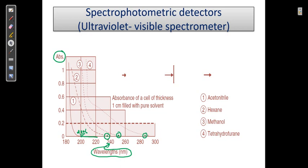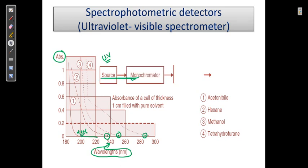The UV detector working principle: a source produces UV light, which passes into a monochromator. From the monochromator it goes into the flow cell, and from the flow cell it goes into the detector.